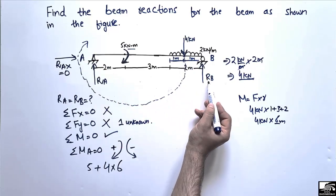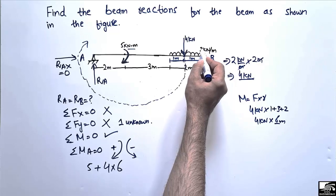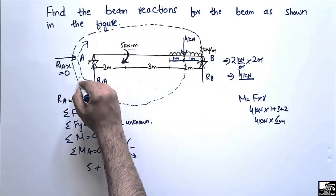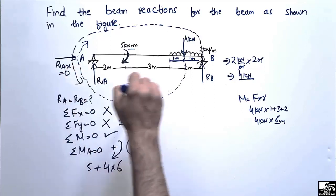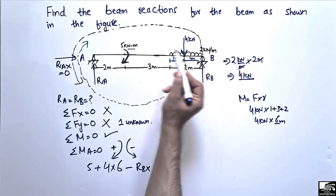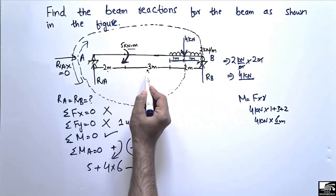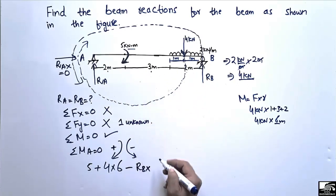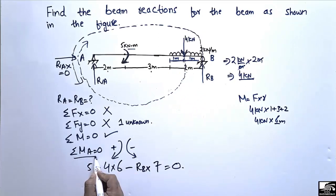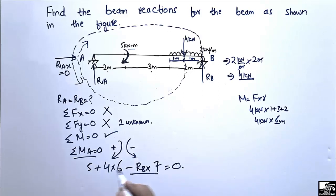The next term is RB. Since RB acts upward, it creates an anti-clockwise moment about point A, so it is taken as negative: −RB × moment arm. The moment arm is the distance from point B to point A, which is 2 + 3 + 2 = 7 meters. So the term is −RB × 7. Setting the summation of all moments about point A equal to zero gives us the equation.